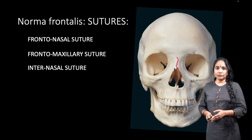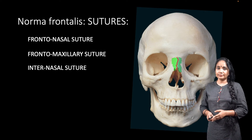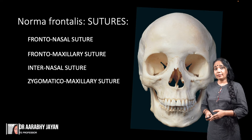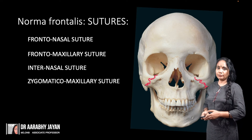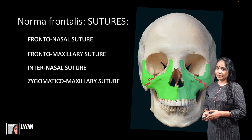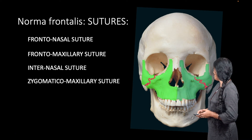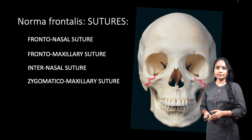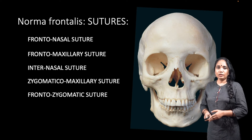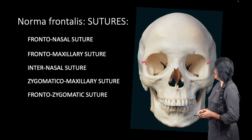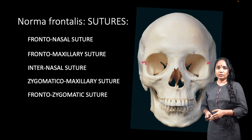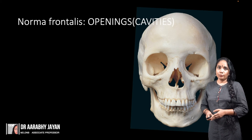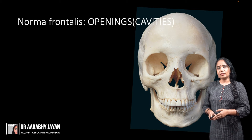There is an internasal suture between the two nasal bones, and then we have the zygomaticomaxillary suture which is between the zygomatic bones and the maxillary bones, visible in the norma frontalis. We also have the frontozygomatic suture, which is a small suture visible just lateral to the orbit, found between the frontal bone and the zygomatic bones. Let us now look at the openings or cavities seen in the norma frontalis.